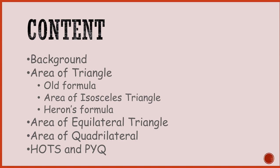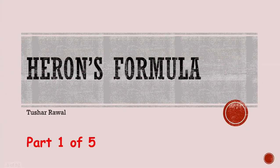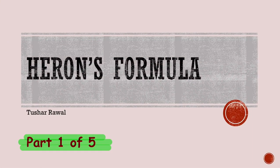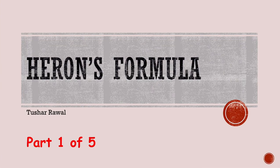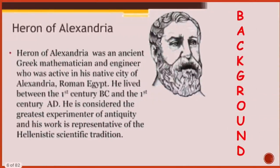Everything won't be covered in one class as that would be too difficult. Today's class will cover only the first highlighted topics: background, area of triangle with the old formula, and area of isosceles triangle. This is part one of five videos. Links to other parts are in the description or the playlist section — I recommend watching all the videos.